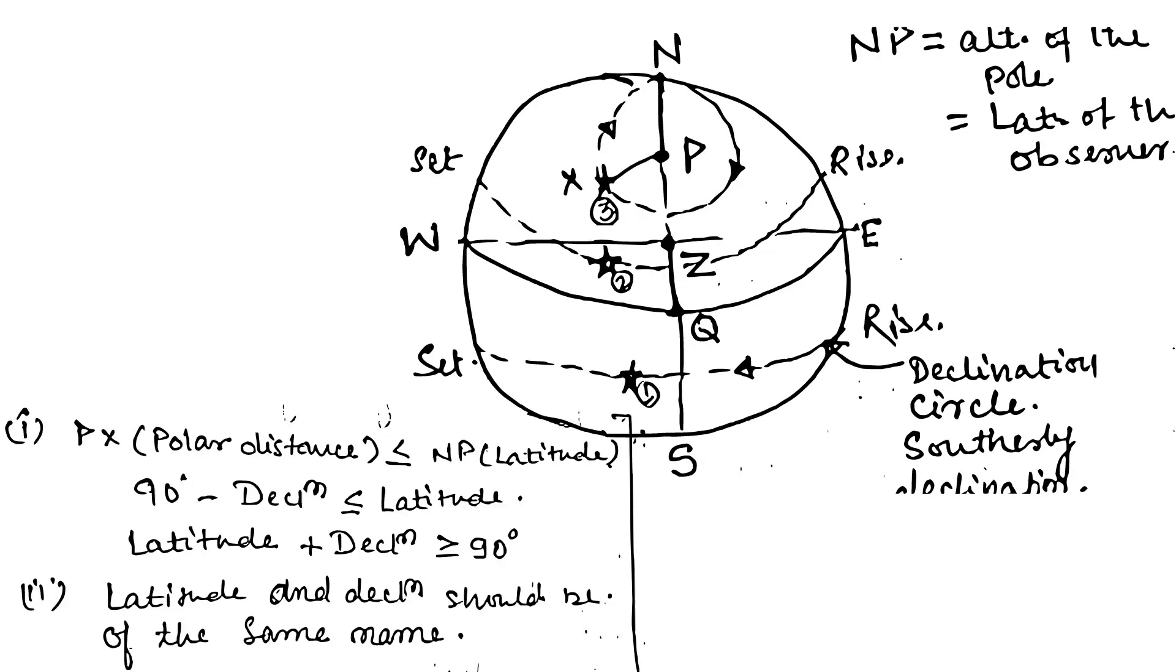So this is the second condition for a body to be circumpolar. Finally, we have two conditions for a body to be circumpolar: first is the latitude and declination should be of the same name, and second, latitude plus declination should be greater than or equal to 90 degrees.